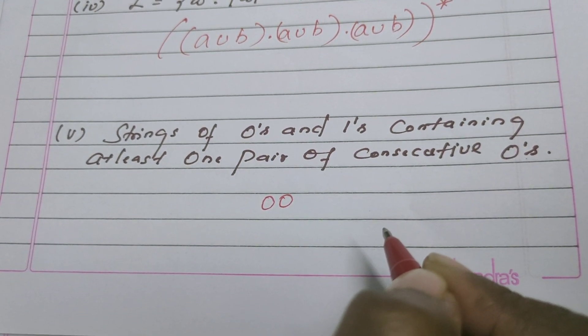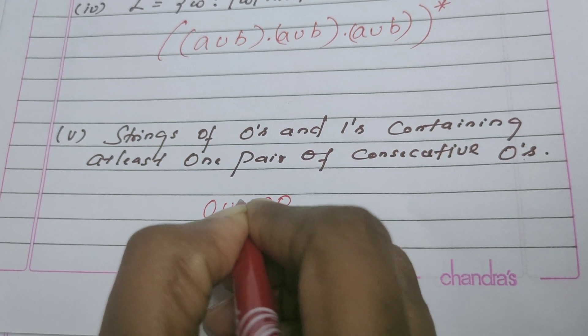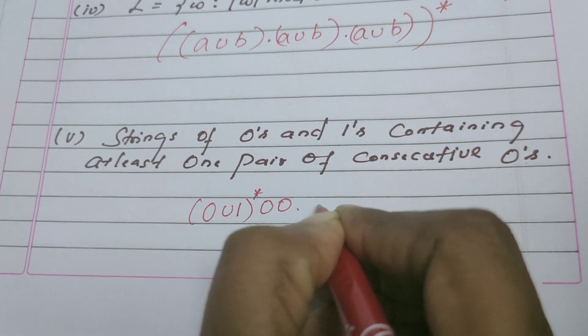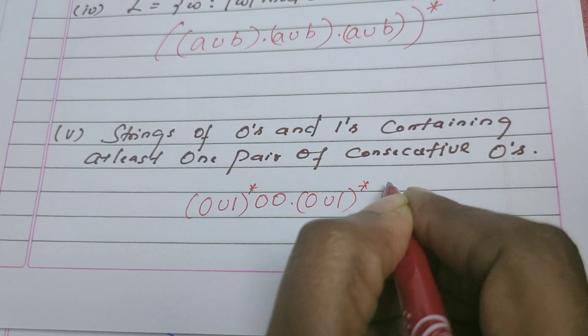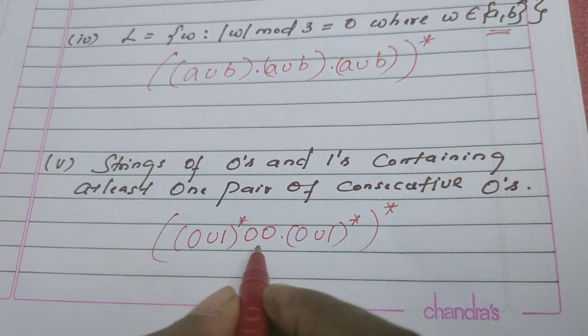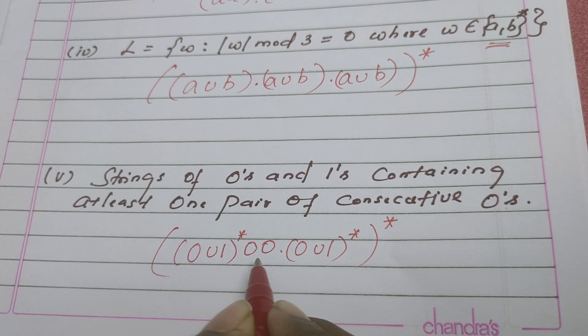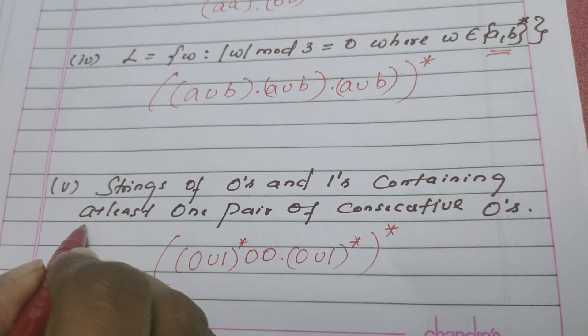In every string, so it might be preceded by (0 union 1) whole star, it might be succeeded by (0 union 1) whole star. I put a whole star in order to confirm that there is not only one pair, there is more than one pair of these consecutive 0's, because the question says that at least one pair of consecutive 0's.